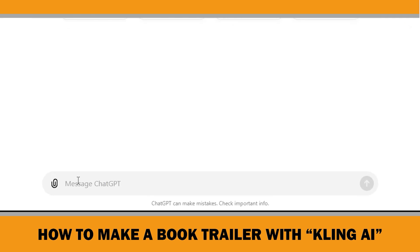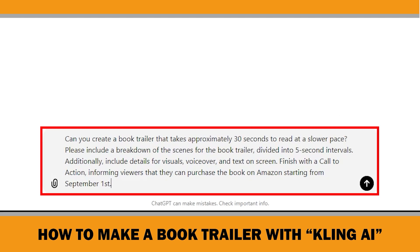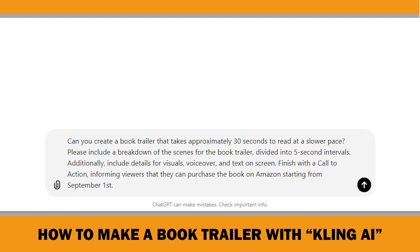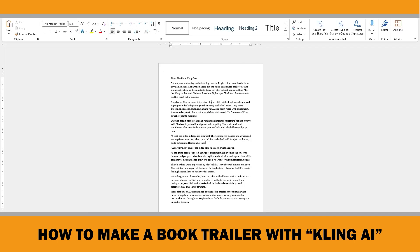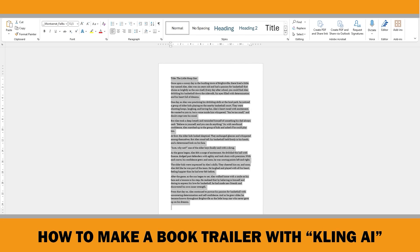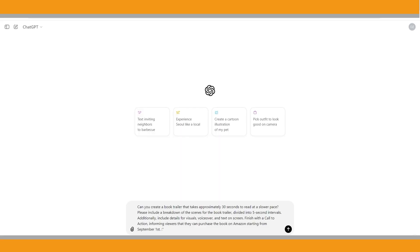My prompt for the book trailer is: Can you create a book trailer that takes approximately 30 seconds to read at a slower pace? Please include a breakdown of the scenes for the book trailer, divided into 5 second intervals. Additionally, include details for visuals, voiceover and text on screen. Finish with a call to action, informing viewers that they can purchase the book on Amazon starting from September 1st. Next, I will copy and paste the story it wrote at the end of this prompt. Let's see what happens.